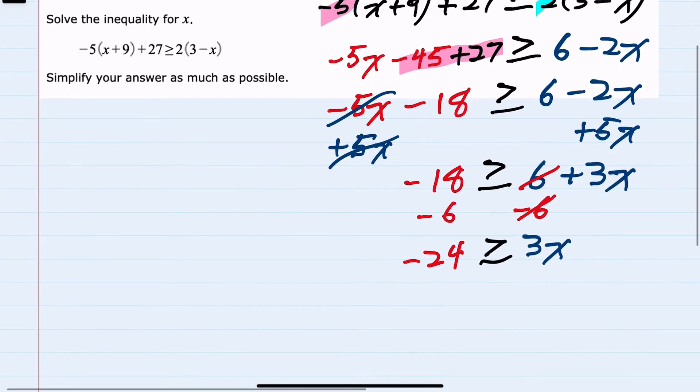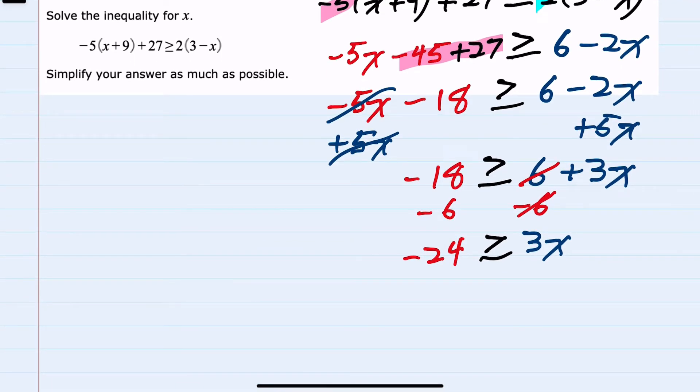One last thing I can do to simplify is divide both sides by 3 to get x by itself. Since I'm dividing by a positive number, the inequality sign will stay the same. If I had divided or multiplied by a negative at any point, I would want to change the direction of the inequality. Since I haven't done that, the sign stays the same, and I now have just x on the right-hand side.